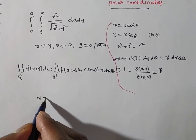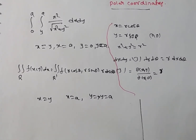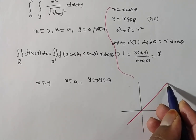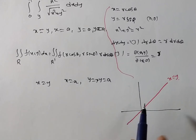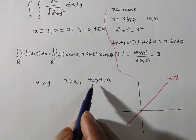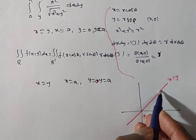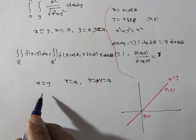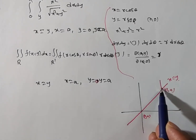So we have x = y to x = a, and y = 0 to y = a. I am drawing the xy-plane to identify the region. The line x = y passes through the origin. When y = 0, x = 0, giving point (0, 0). When y = a, x = a, giving point (a, a). The line x = a is parallel to the y-axis, giving point (a, 0).